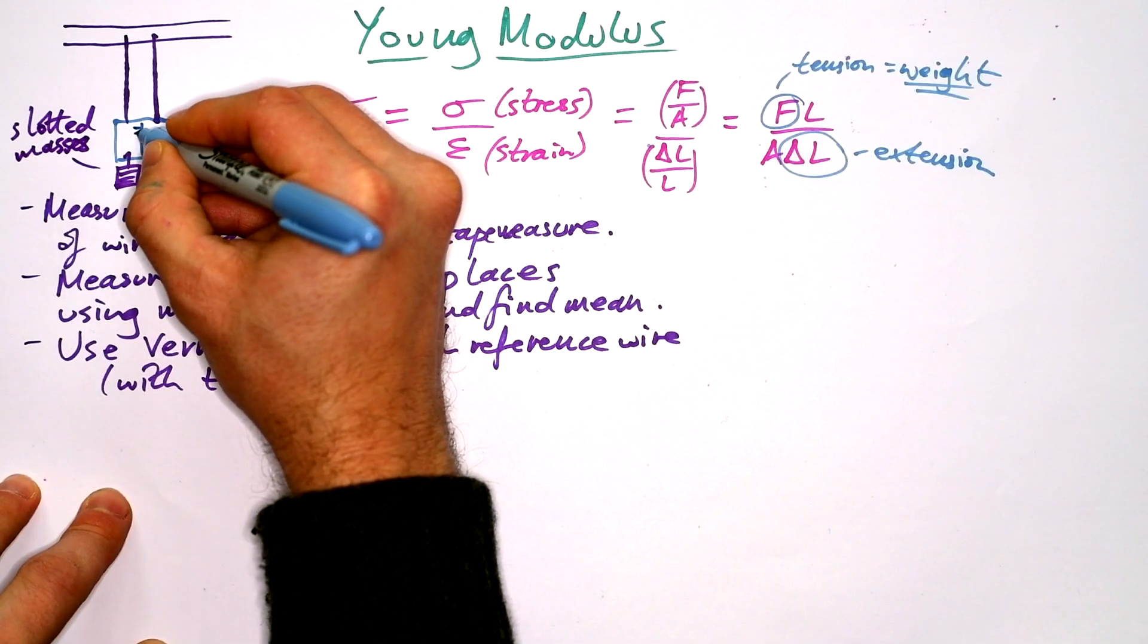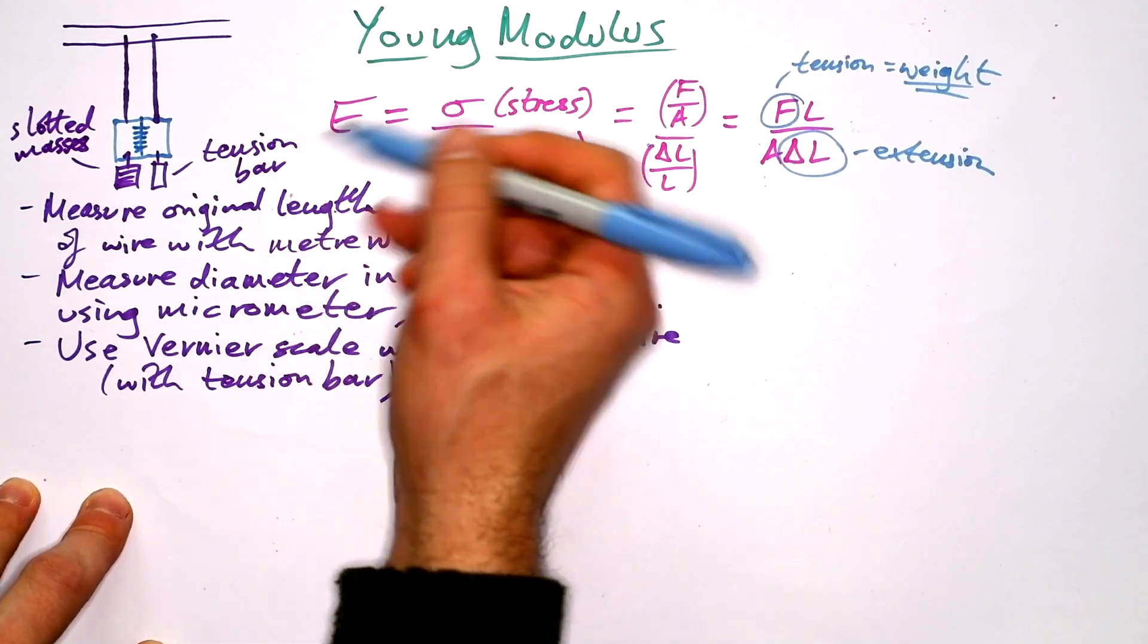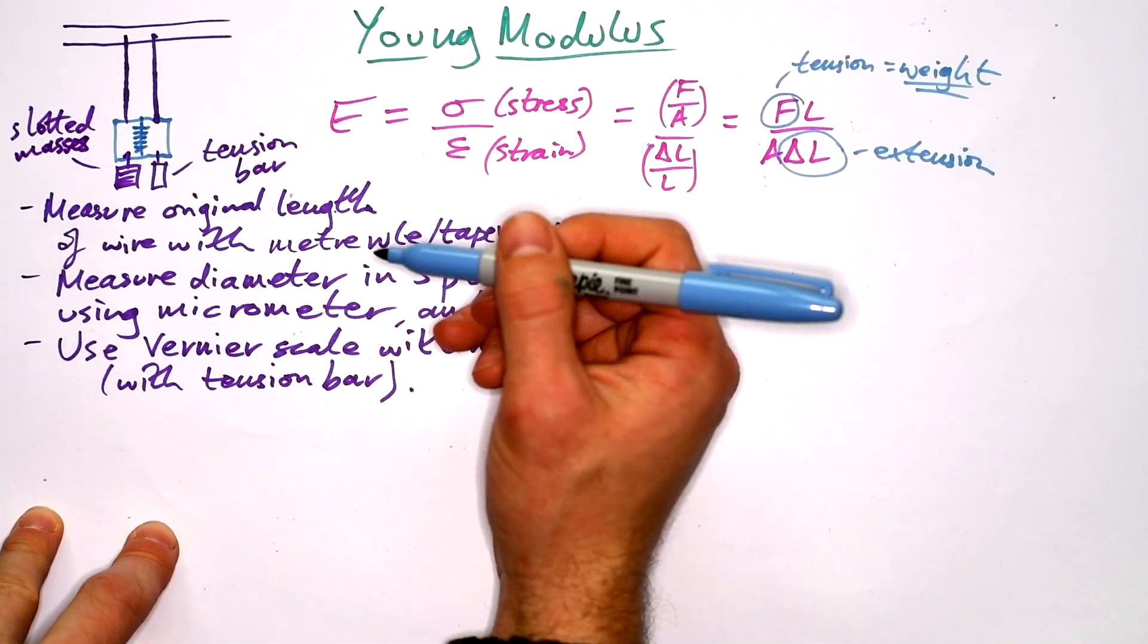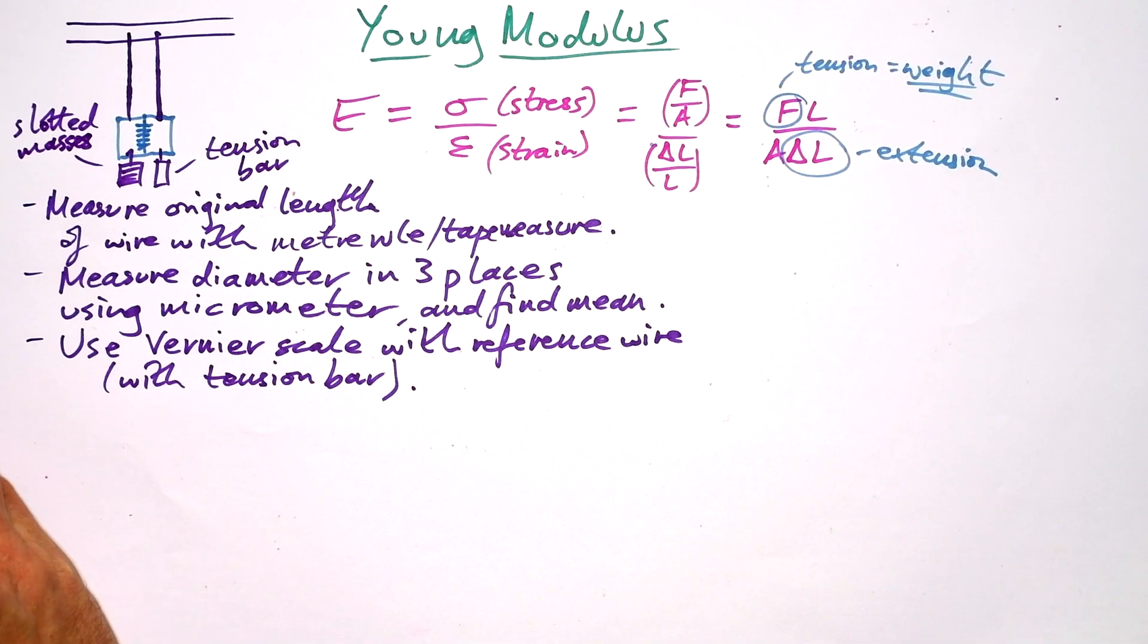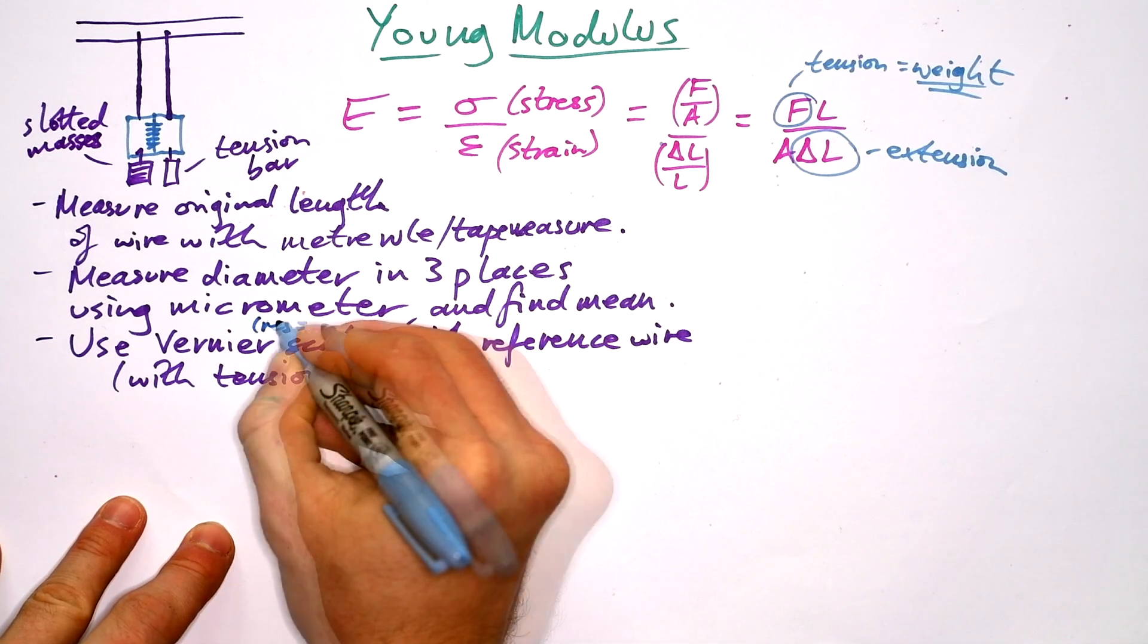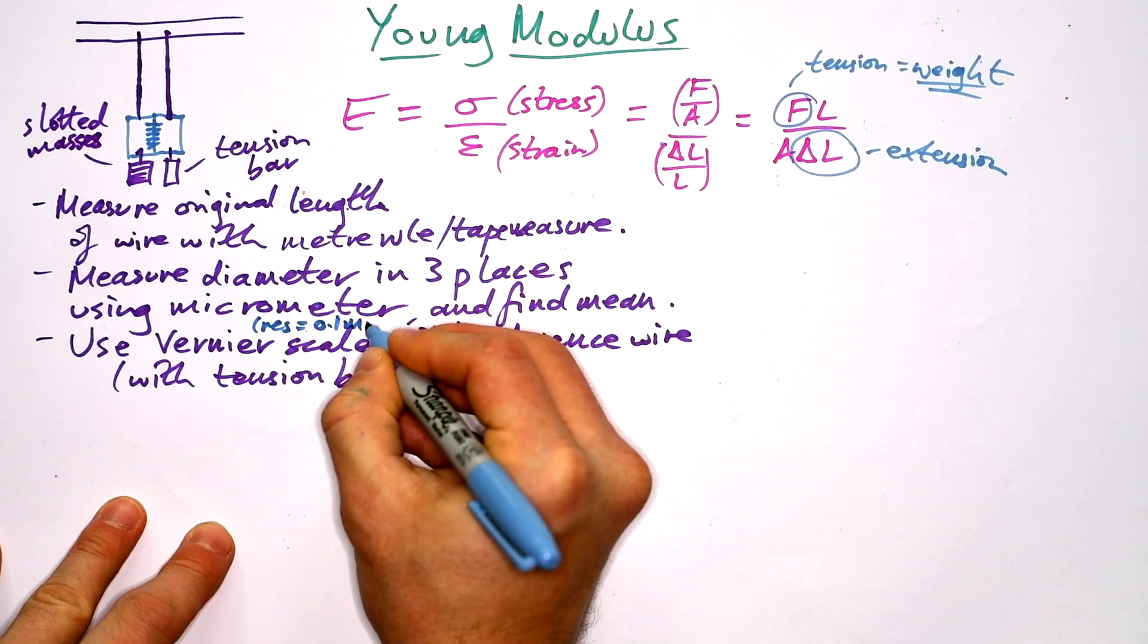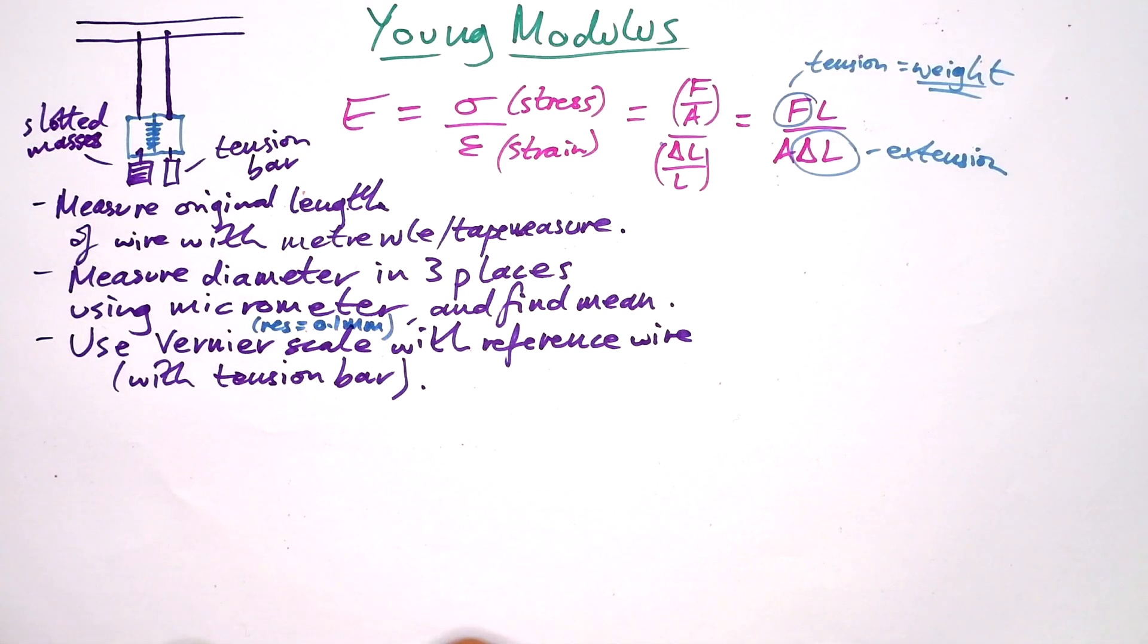Now with a Vernier scale, you'll have your numbers and then one will slide past the other. And then that will not only give you the number of millimeters that one of them has moved, but also tenths of millimeters as well. So the Vernier scale will probably have a resolution of 0.1 millimeters. But what we'll find is that that's not a great resolution, but that does allow us to talk about uncertainties in a minute.